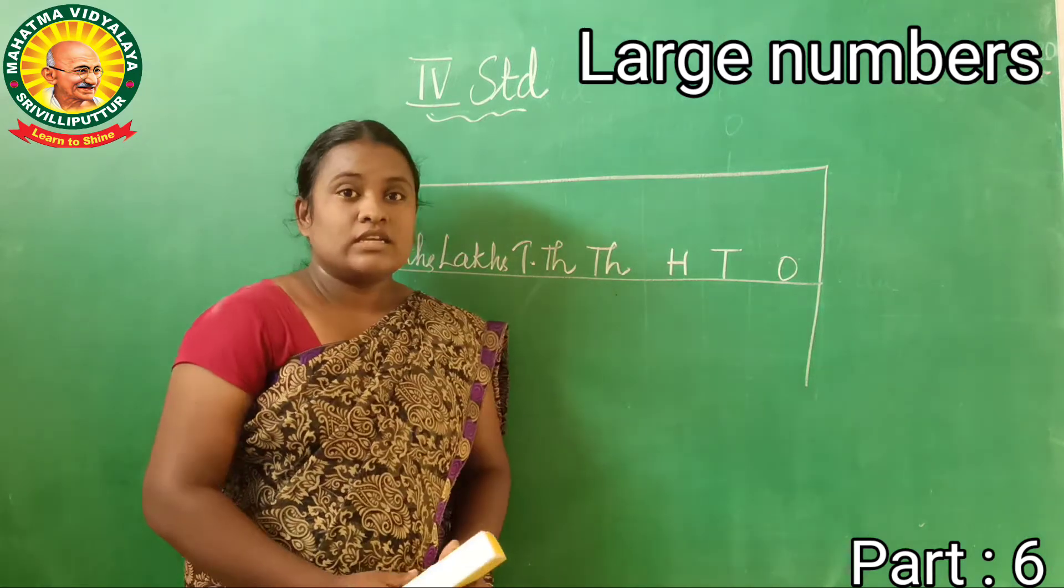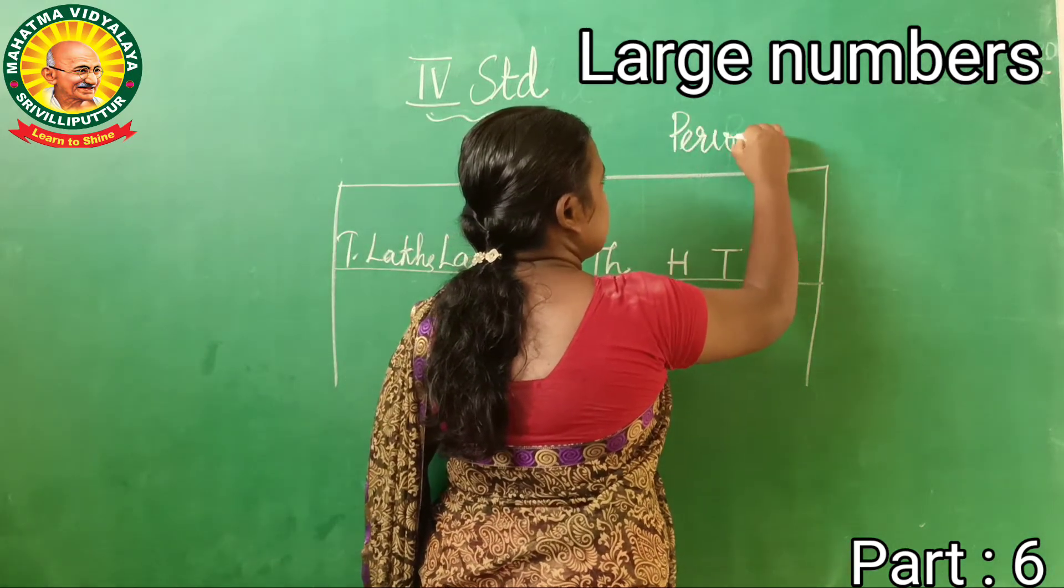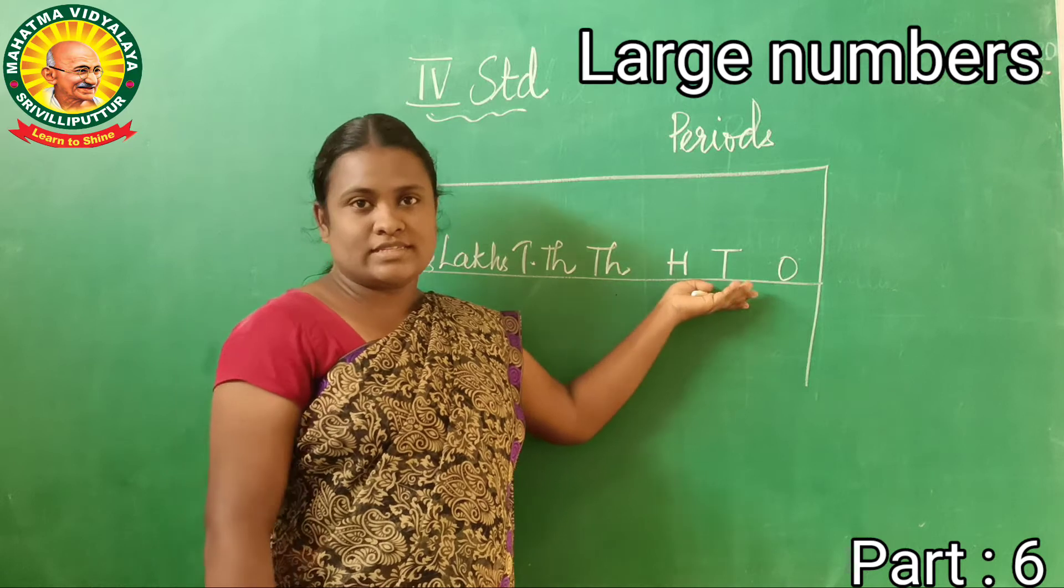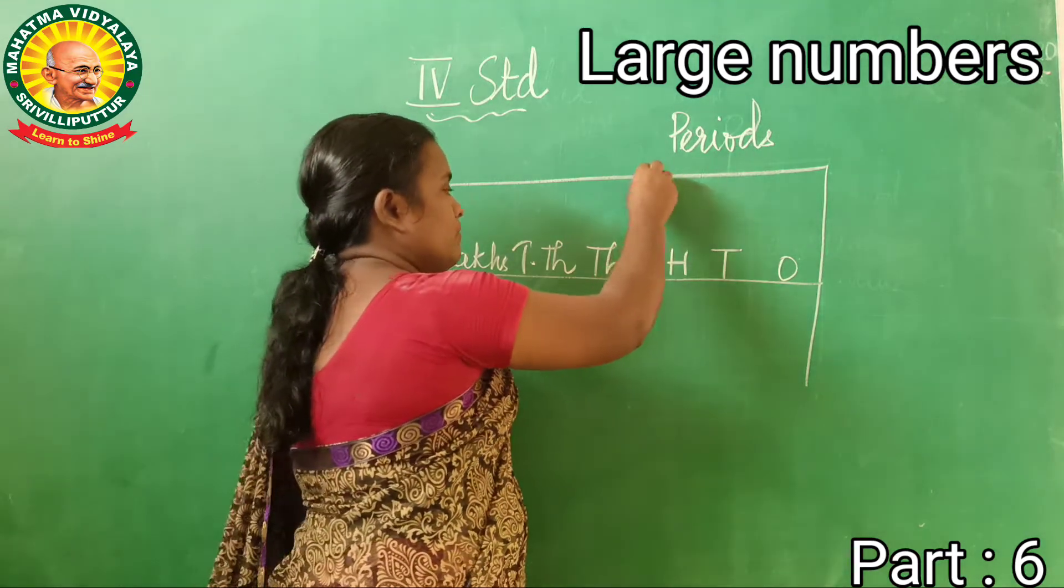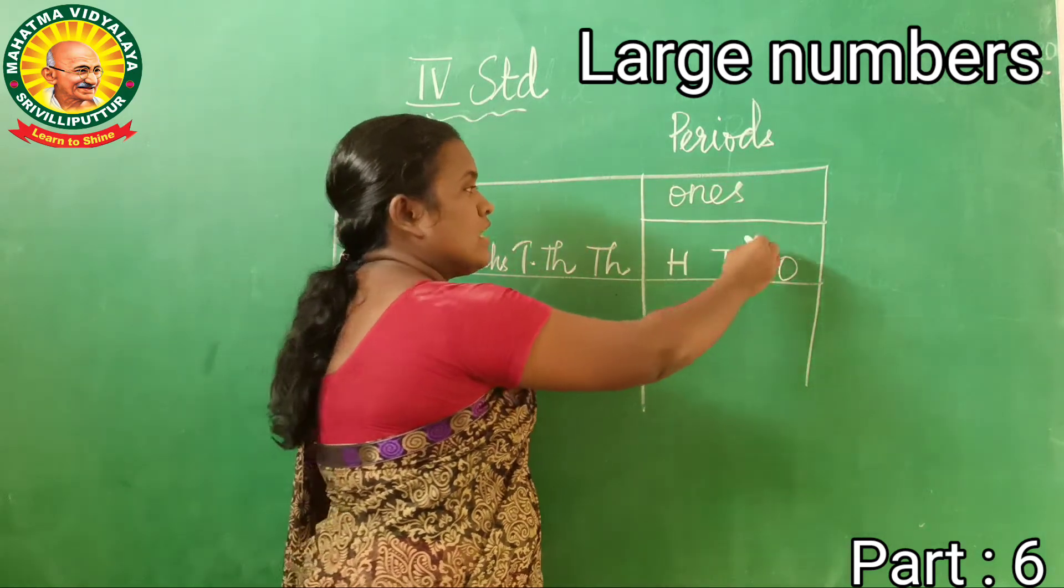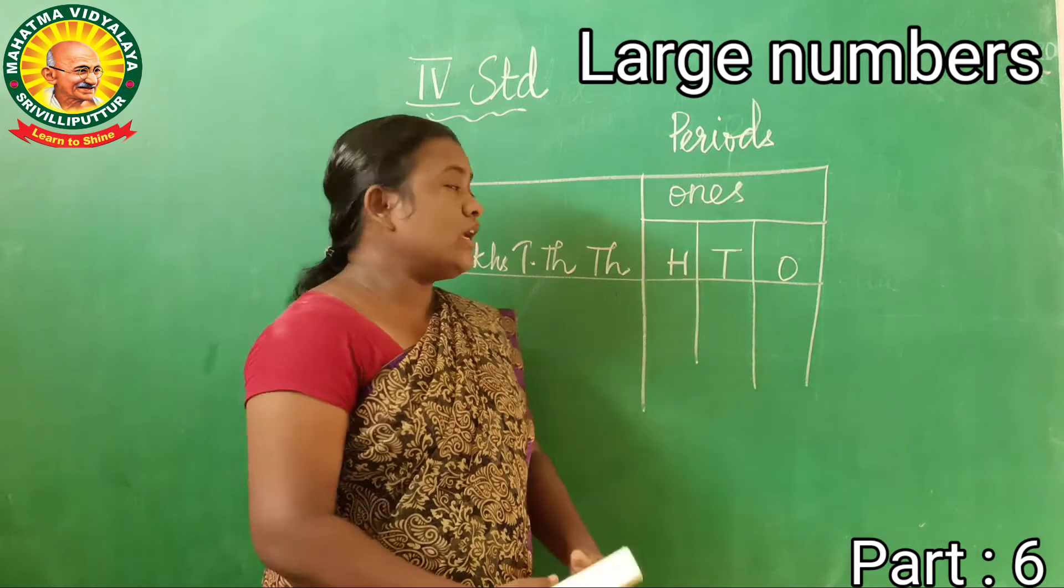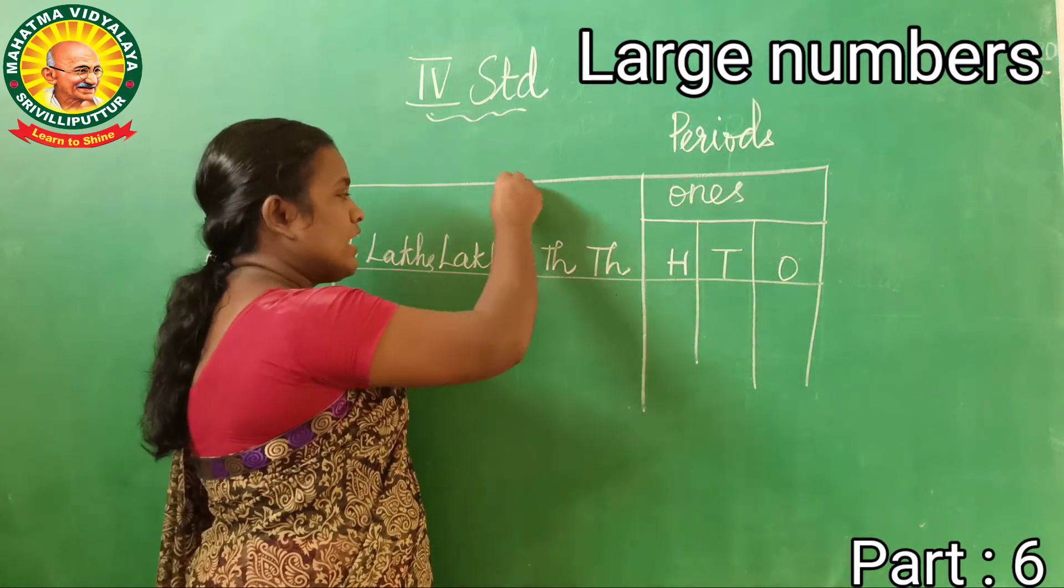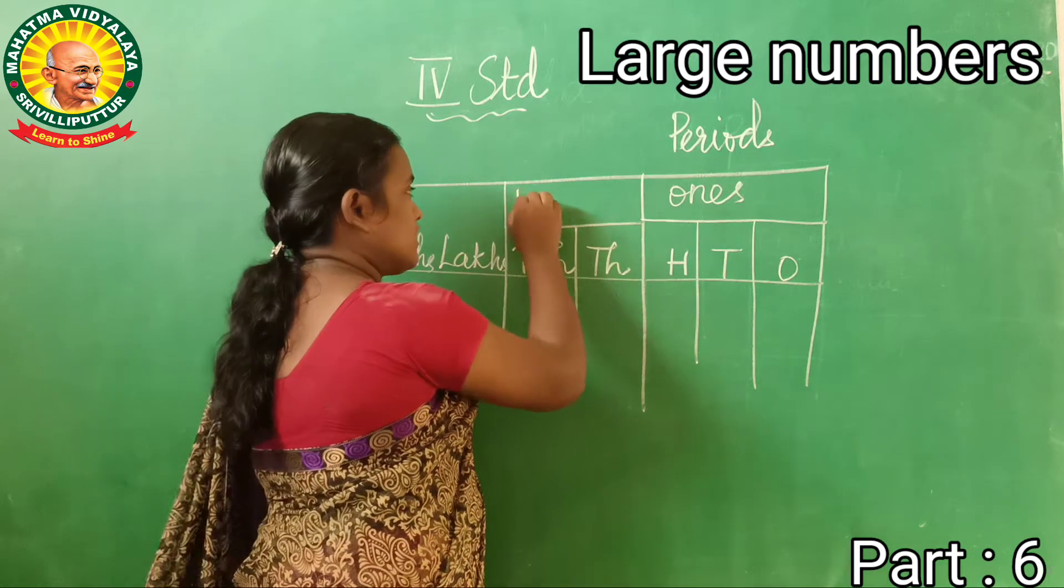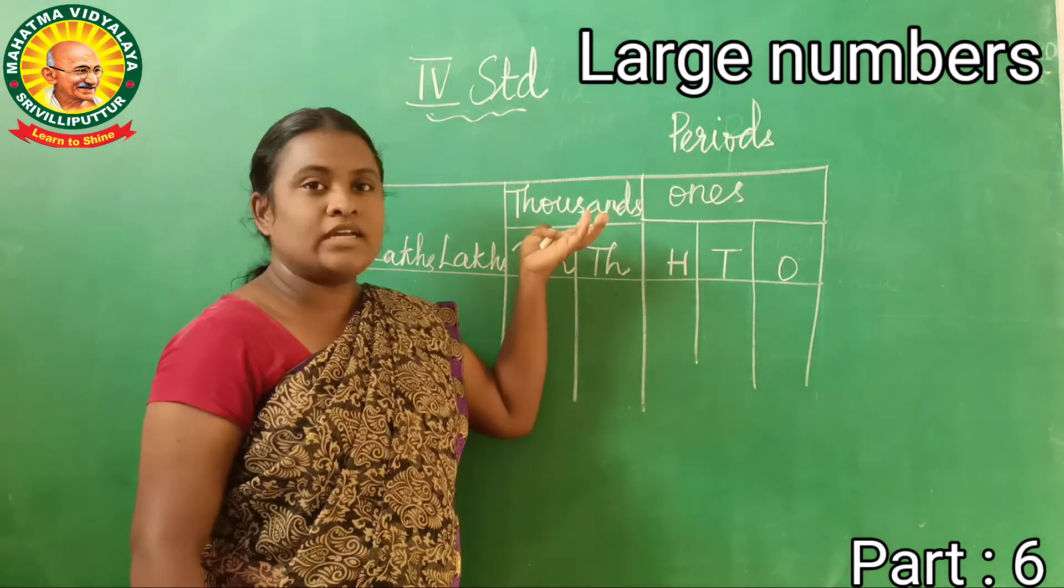And now we are going to learn more periods. Once, tens, and hundreds - these places belong to the period of ones. And next one is thousands and ten thousands. These places belong to the period of thousands.